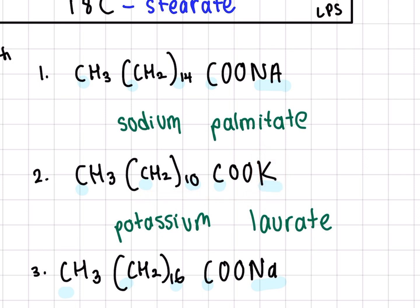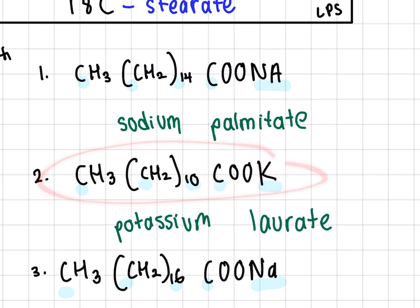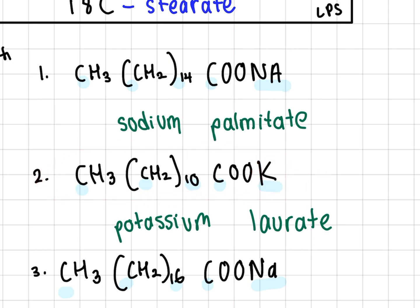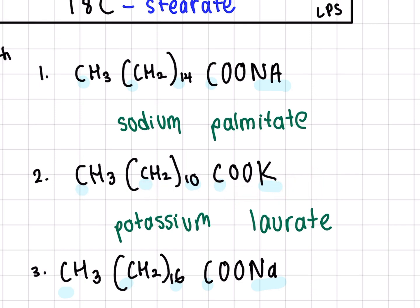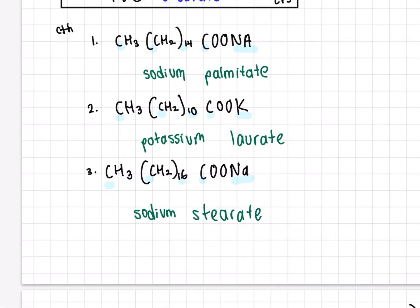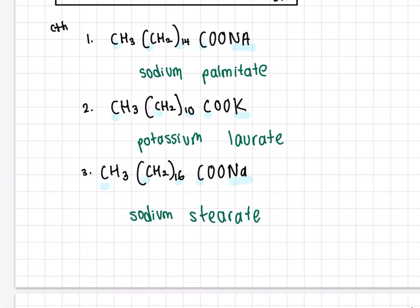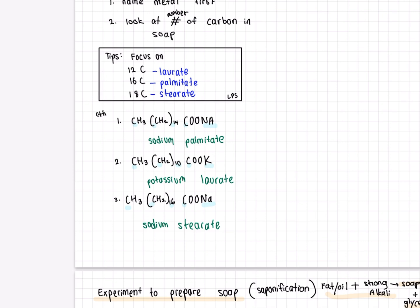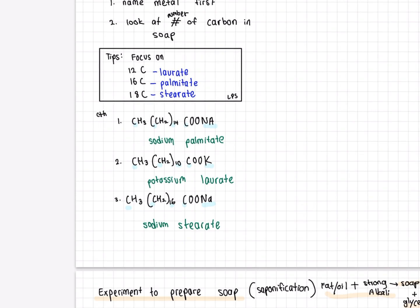K for potassium. Now we're going to count the amount of carbons here: 1 plus 10 plus 1 gives you 12. So 12 is laurate, which means it's potassium laurate. Same process as before — easy, right? Okay, let's move on.